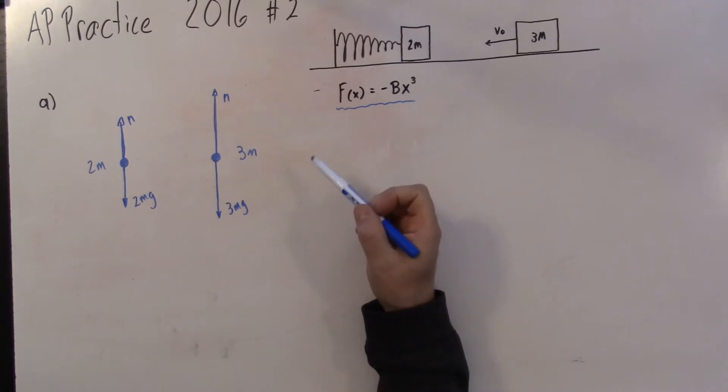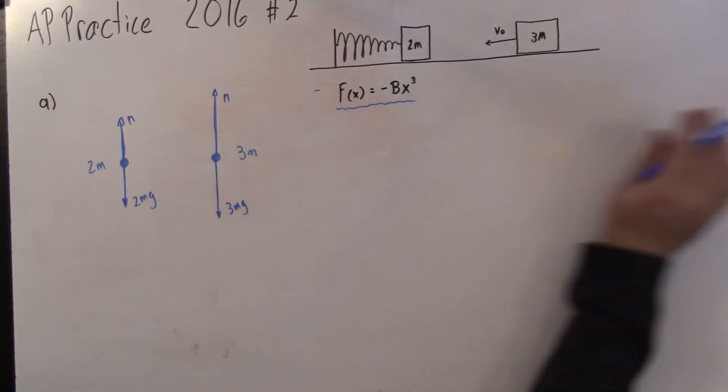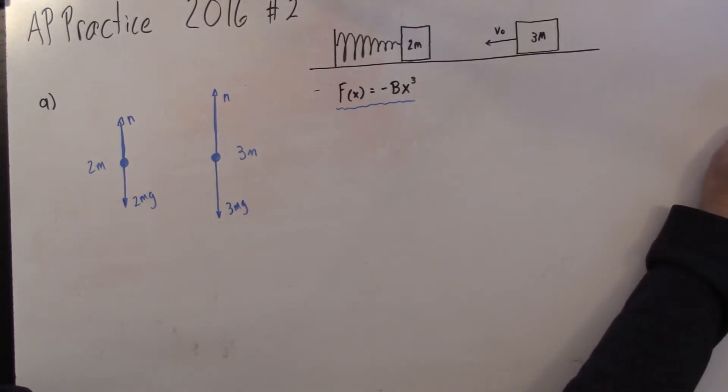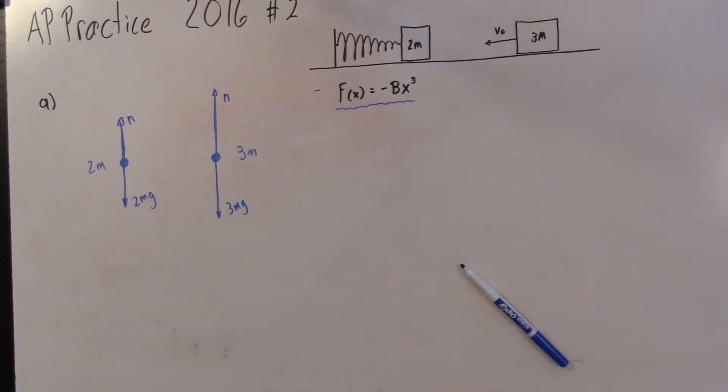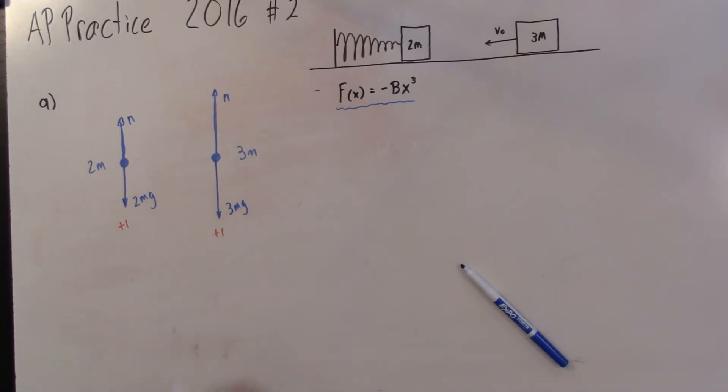I think what they're trying to do is catch kids that think because this one is moving left, there must be a force left. I'm going to check the answer key. According to the answer key, this was 2 points. You get 1 point for correctly drawing and labeling the vectors on this one, and plus 1 for this one. And if there were any extraneous vectors, you lost points.